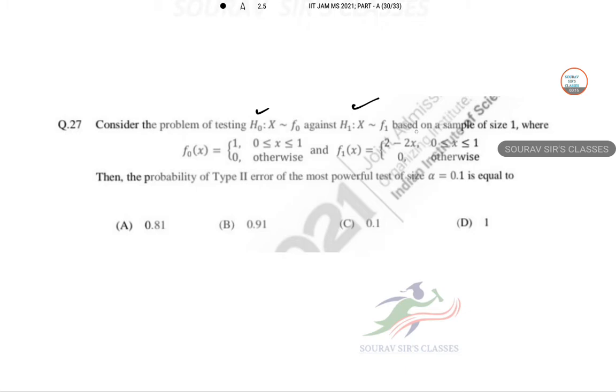Where Fx is given as one function and F1 is given another function. We need to find the probability that type 2 error, the probability of type 2 error.